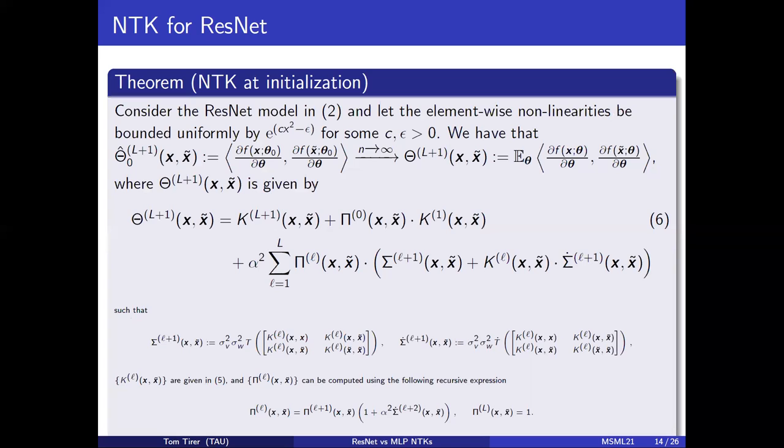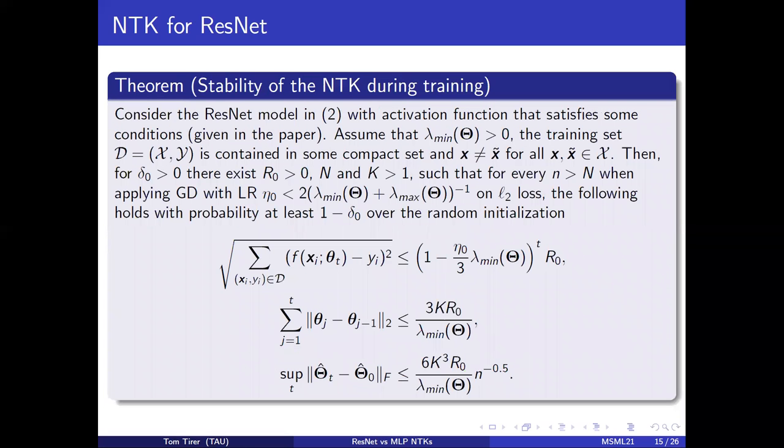And this is the complicated formula that we got for the ResNet NTK under mild assumptions. I will not present them here, but rather jump to the stability results, which is given here.